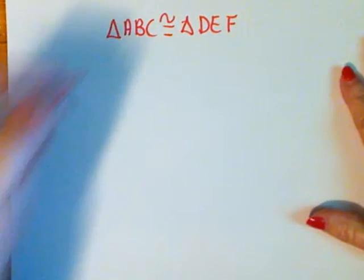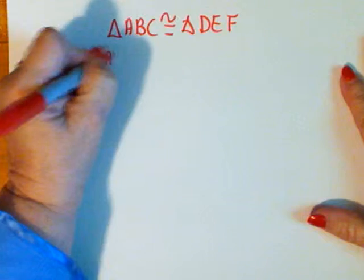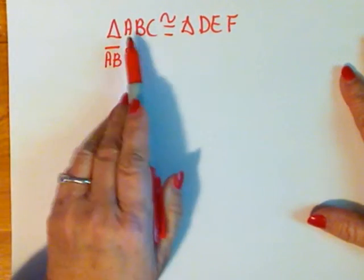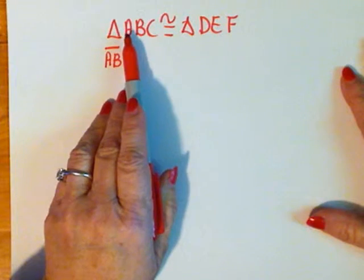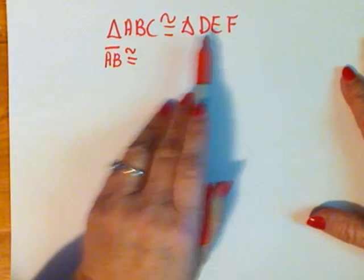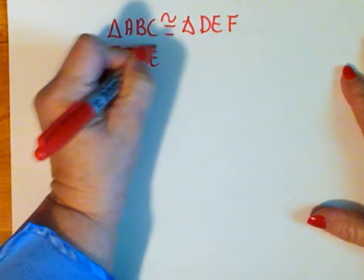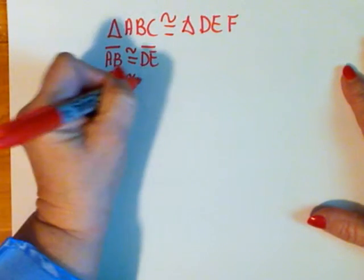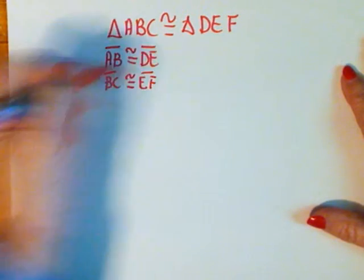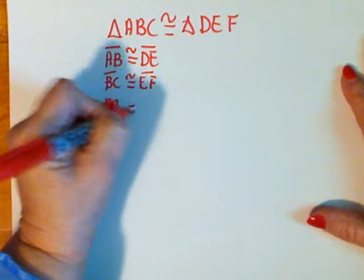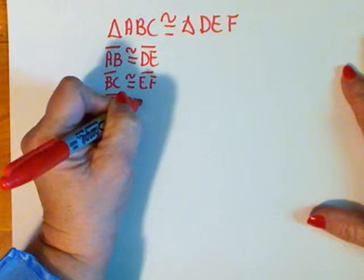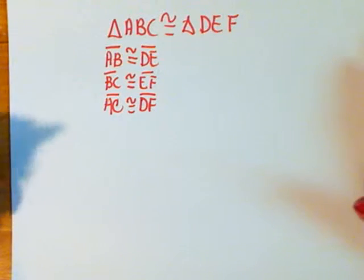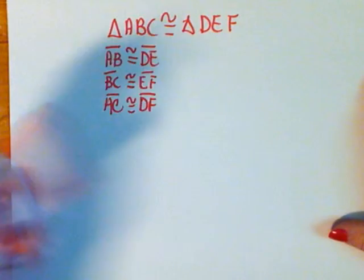It doesn't matter what the picture is. I know that side AB is going to be congruent to the side that's located in the same position—AB would be DE. Side BC is then going to be congruent to EF, and side AC is going to be congruent to side DF. Those are the three congruent statements related to sides.